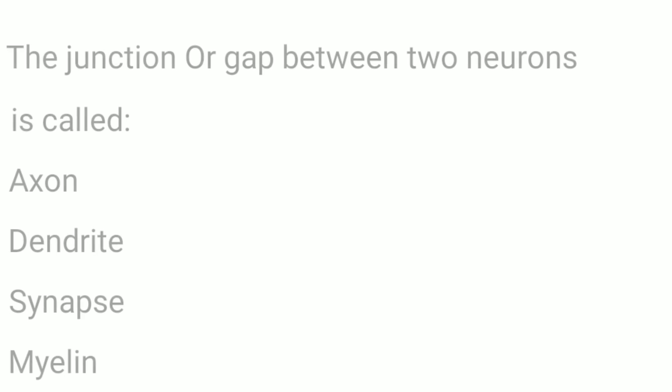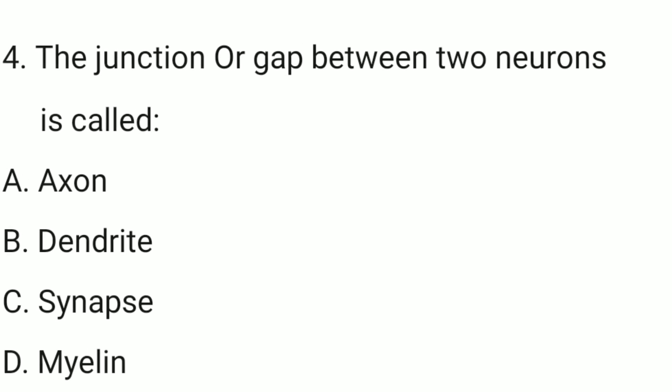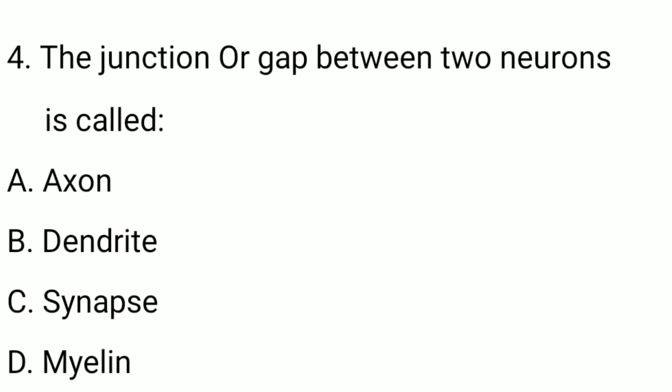Question number four: the junction or gap between two neurons is called? The correct option is option C — synapse.